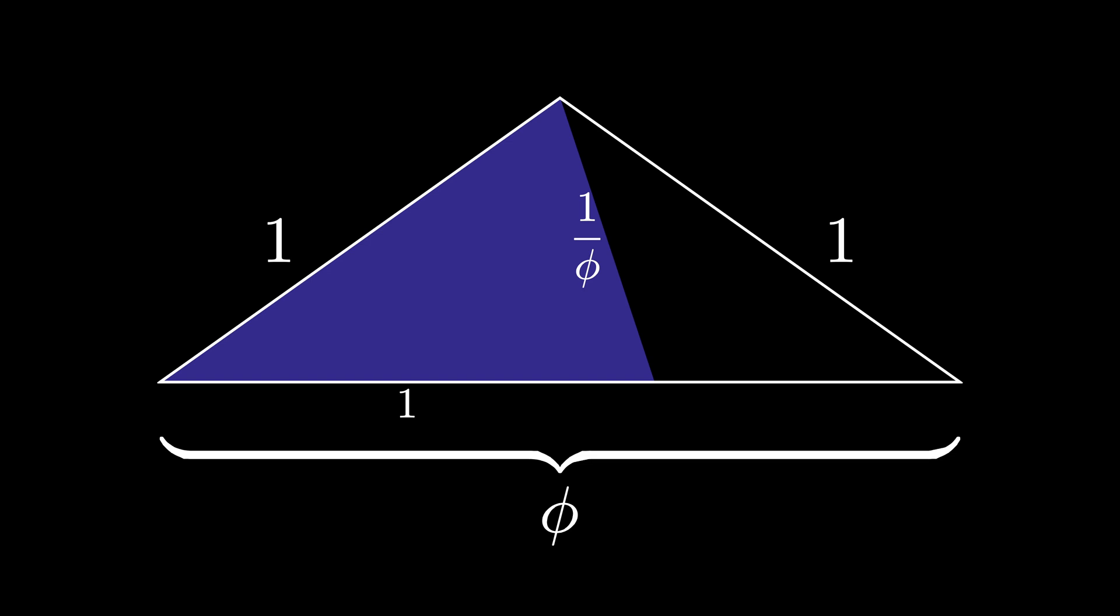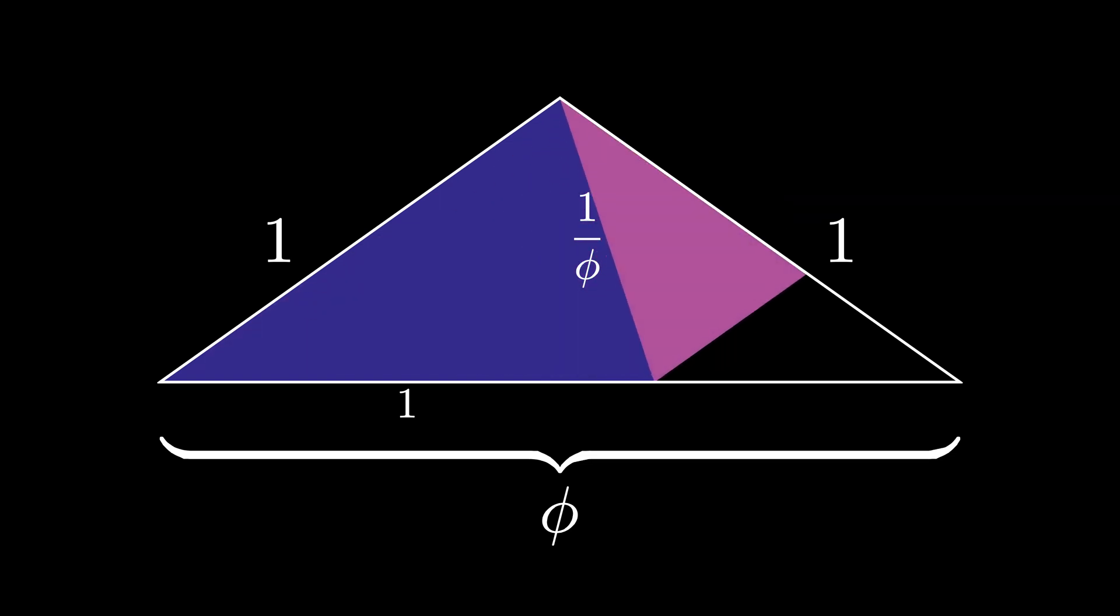Now we scale the golden triangle by the value 1 over the golden ratio. This allows us to fit a new triangle right next to the original, with sides of length 1 over the golden ratio, and base given by 1 over the golden ratio squared. This is actually just another golden triangle, as it's similar to the original.